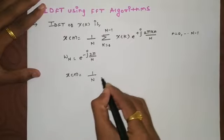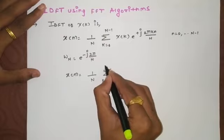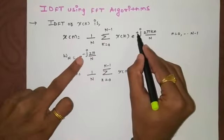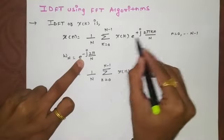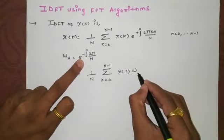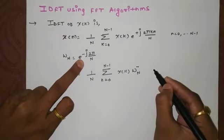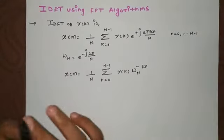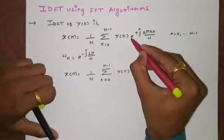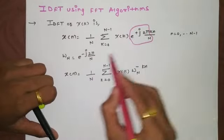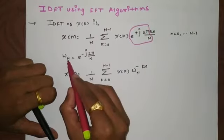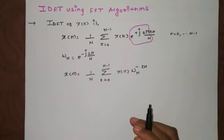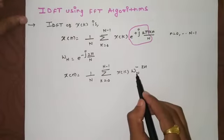Substituting this value, the IDFT becomes 1 over N summation of X(k) times omega_N raised to minus k n. The reason is that the exponent in the IDFT is e raised to plus j 2 pi over N, so it should be omega_N raised to minus 1, which we write as omega_N raised to minus k n.